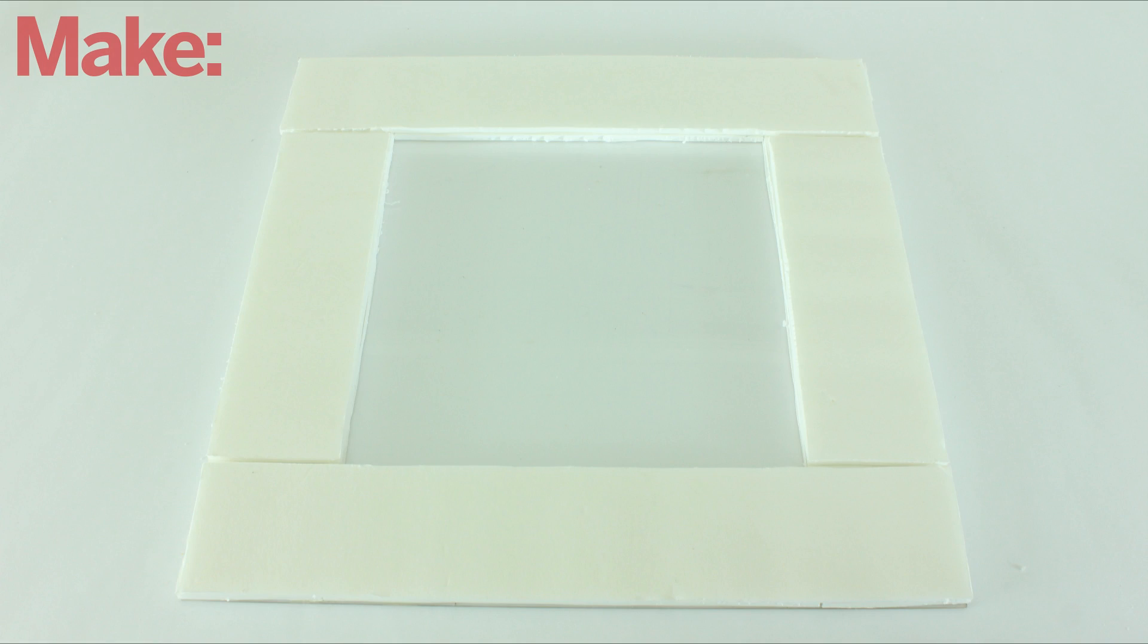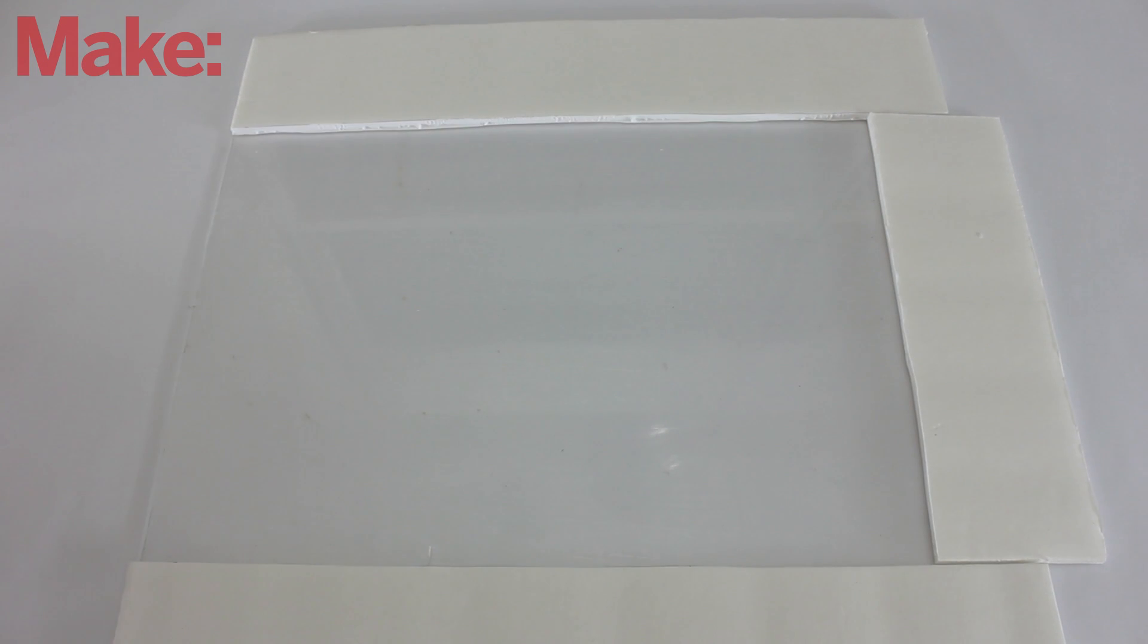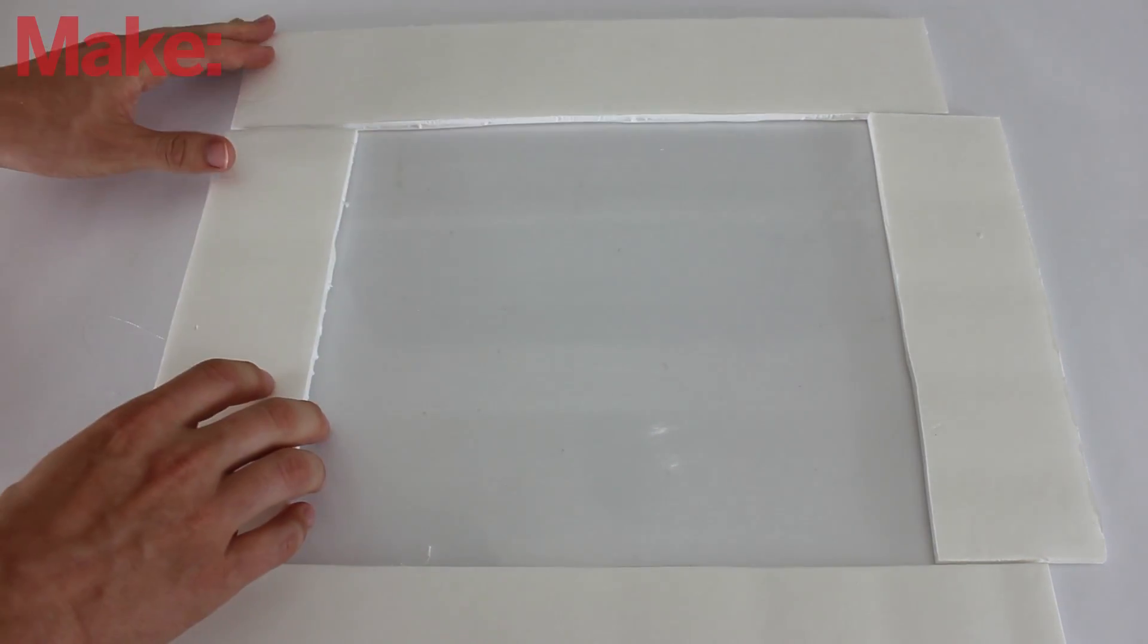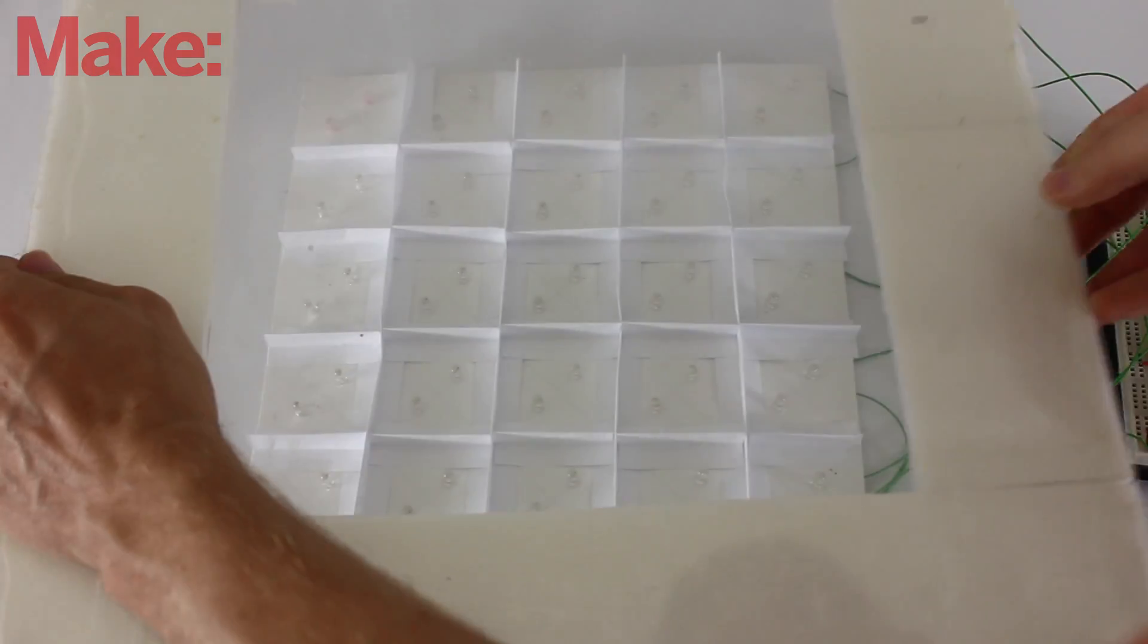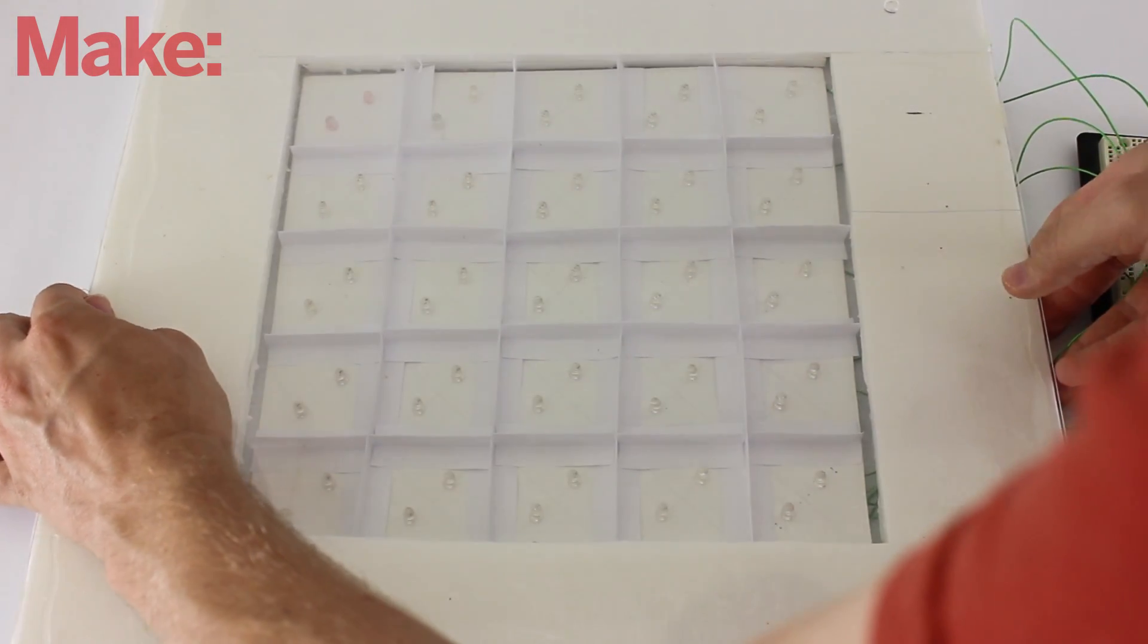Now you need to construct the plastic cover plate that will hold the dessert. To do this, I started by cutting out a 16 inch by 16 inch piece of clear plastic. Then I cut some 3 inch wide pieces of foam board and glued them around the outside. When you're done, the cover plate should perfectly fit around the LED matrix.